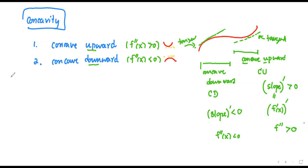A graph could have more than one concavity behavior. We determine which interval the graph is concave up and which interval it is concave down using a breaking point — similar to the critical point that breaks from increasing to decreasing. To find the point of change from concave up to concave down, or from concave down to concave up, we call it the point of concavity or the point of inflection.